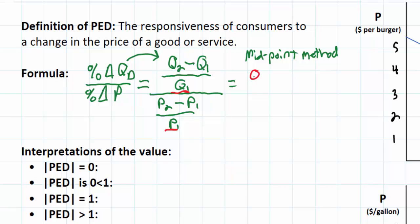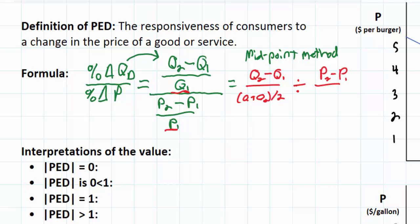The midpoint method works as follows: we take Q2 minus Q1 and divide it by the average of the old and new quantity, which is (Q1 + Q2) / 2. This gives a more accurate percent change in quantity regardless of whether price is increasing or decreasing. For the denominator, we do P2 minus P1 divided by the average of P1 and P2, i.e., (P1 + P2) / 2. Note: the denominator of the numerator fraction should be Q1 in the standard formula.